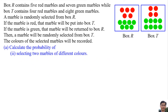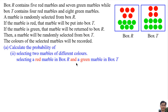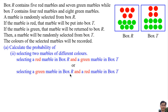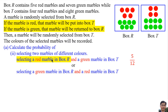Now for part (b), we consider two possibilities. The first possibility: the probability of selecting a red marble from Box R is 5 over 12 — there are 5 red marbles and the total is 12. If the marble is red, that marble will be put into Box T. Since a red marble is selected, one red marble is added into Box T.